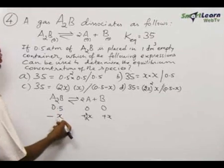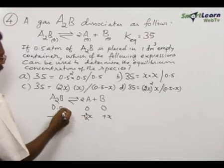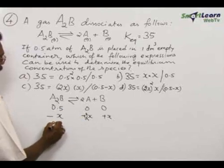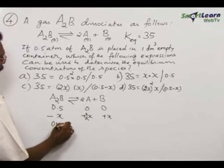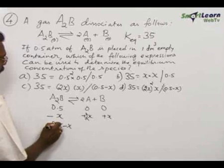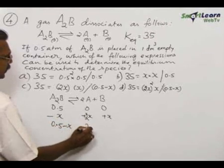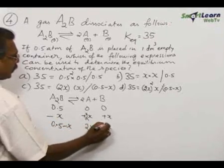Now, what is Kc? For that we have to arrive at the equilibrium concentration. So, 0.5 minus x, and here 2x, and here x.